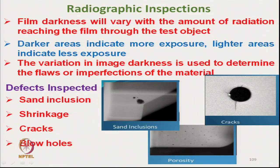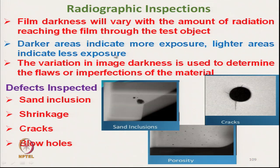The film darkness will vary with the amount of radiation reaching the film through the specimen. The portion where more exposure occurs will be darker, and lighter areas indicate less exposure. The variation in darkness of the image is used to determine the flaws or imperfections of the material. If there is no defect present, the darkness of the image will be uniform with no variation.